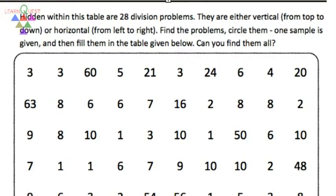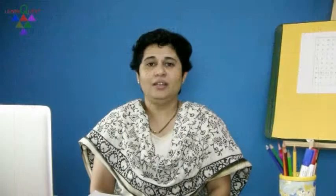This is a vertical problem: 20 divided by 2 equals 10, going from top to down. Did you find 28? Or did you find more?